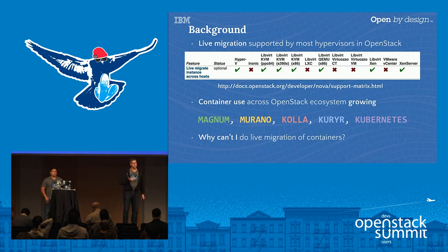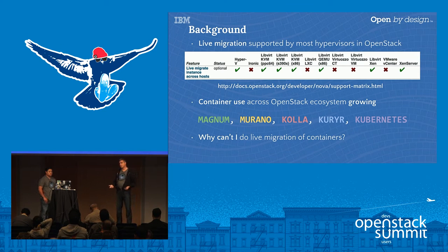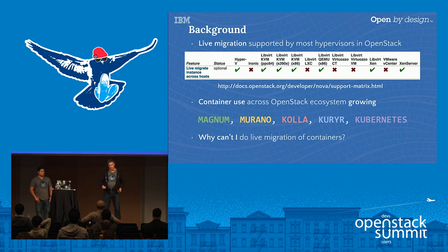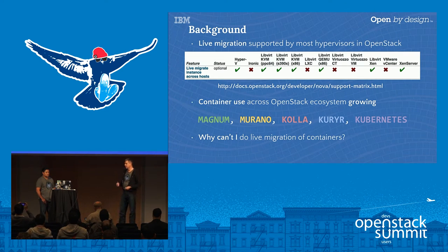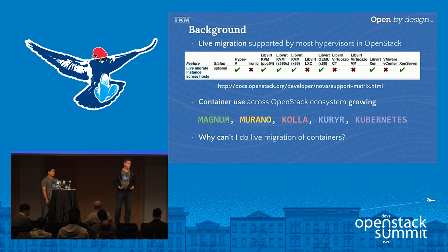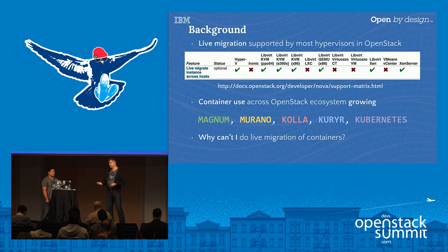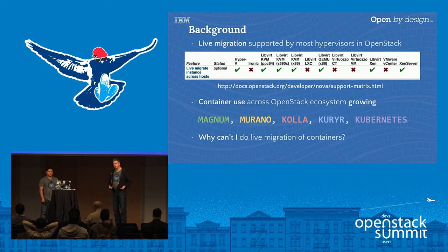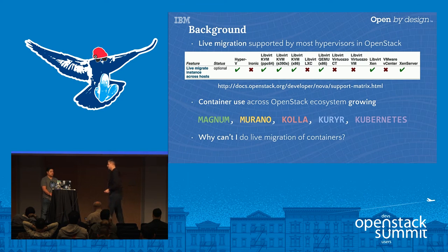A little bit of background. If you've been around the OpenStack community, you know if you've looked at the Nova support document, live migration in a hypervisor scenario is sort of accepted and in many of the hypervisors that are supported, this is a capability you have today. VM systems are just one class of virtualization now. Projects like Magnum, Murano, Kubernetes — there's obviously an expectation that as container use grows, there could be interest in the same capability to live migrate a container, not a VM, but a container between compute hosts.